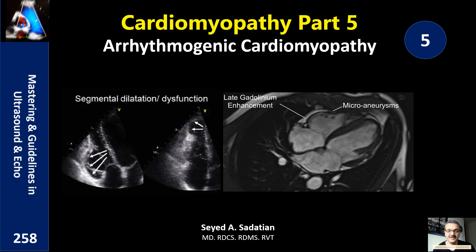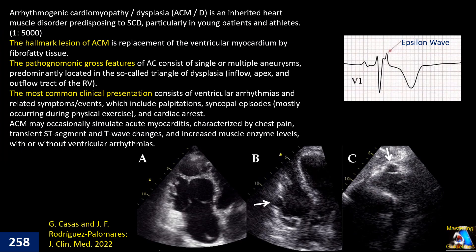Welcome to Mastering and Guideline in Ultrasound and ECHO. Arrhythmogenic cardiomyopathy or dysplasia is a genetic disorder of the heart, and after hypertrophic cardiomyopathy, it is the second cause of death among young and athletic people. The incidence is one per thousand to five thousand cases.